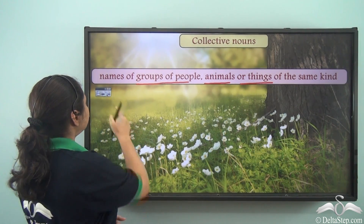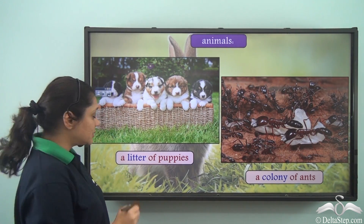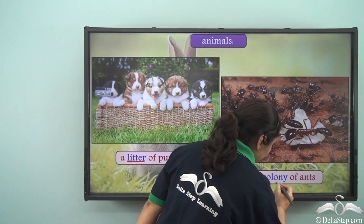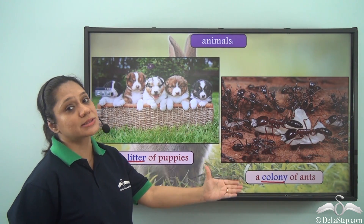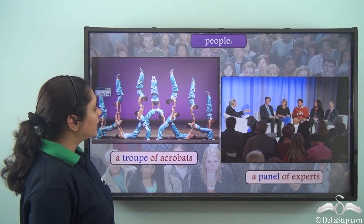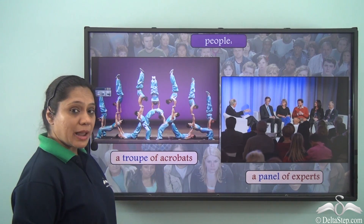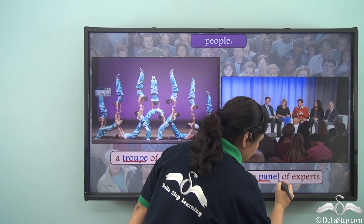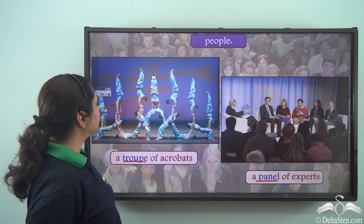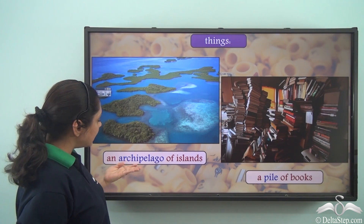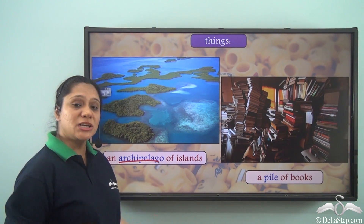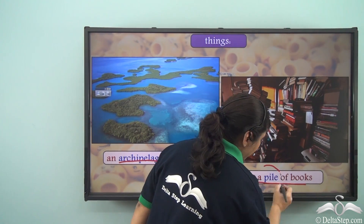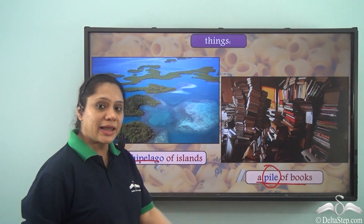Now let us look at a few examples. A litter of puppies — litter is the collective noun. A colony of ants — colony is the collective noun. A troop of acrobats — troop is the collective noun. A panel of experts — panel is the collective noun. An archipelago of islands — archipelago means a group of islands, so this is our collective noun. A pile of books — pile is showing a collection of books, so this is the collective noun.